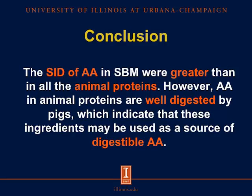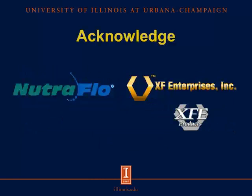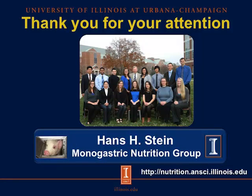The conclusion for the second experiment is that the SID of amino acids in soybean meal were greater than in all the animal proteins. However, amino acids in animal proteins are well digested by pigs, indicating that these ingredients may be used as a source of digestible amino acids. I would like to acknowledge NutraFlow and XFE products for supporting this research. Thank you for listening, and I hope you find this information interesting. If you want to learn more about monogastric nutrition, you are welcome to visit our website.